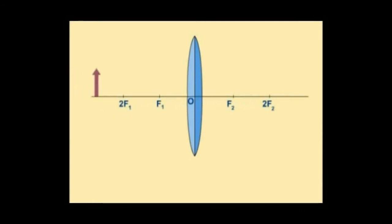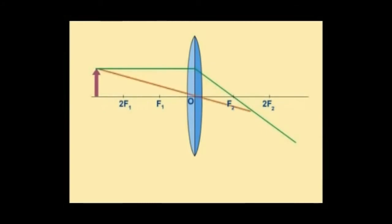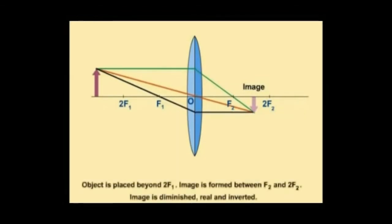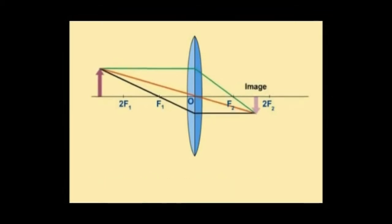Here is a convex lens. On either side we mark the focal point F and 2F. Starting with the object far from the lens: a horizontal ray passes through the focal point; a ray through the center of the lens is undeviated; a third ray through the near focal point is refracted to go parallel. Where these rays meet is where the image forms — between F and 2F. The image is smaller (diminished), upside down, and it's a real image because the rays actually meet there.